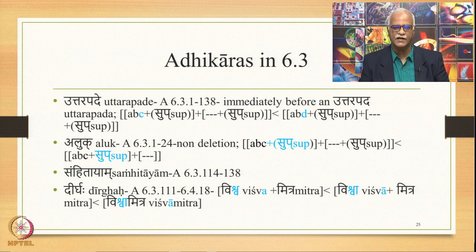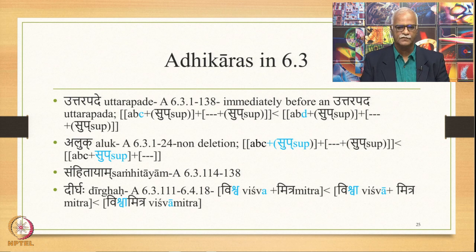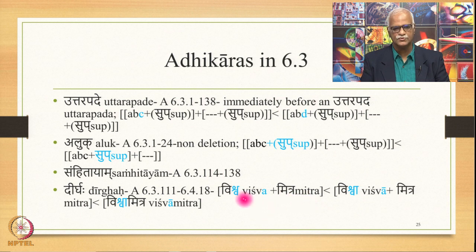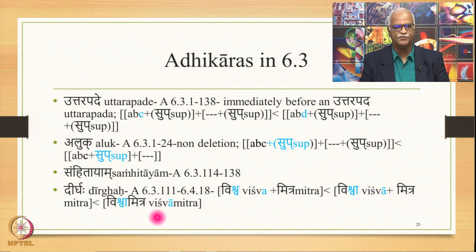Then the important Adhikara is Samhitayam again from 6.3.114 to 6.3.138. There is also another Adhikara Dirgaha from 6.3.111 up to 6.4.18 — and here the Adhikara crosses into another subsection, another Pada. The example is: Vishwa plus Mitra — Mitre Charshav is the sutra appearing in this section, which says that immediately before the Uttarapada Mitra, substitute the short vowel by a long vowel. So Vishwa plus Mitra becomes Vishwamitra — if and only if this word qualifies a Rishi and is a Saudnya.